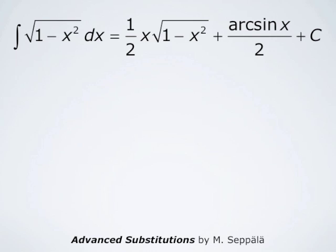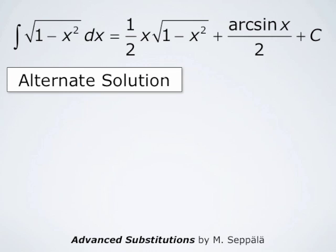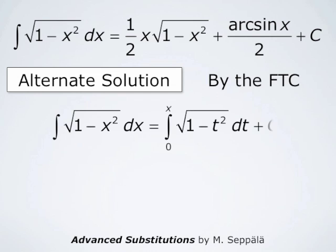This formula can also be derived alternatively. The alternate solution uses the Fundamental Theorem of Calculus, which states that an antiderivative of square root of 1 minus x squared can be obtained as the definite integral from 0 to x of square root of 1 minus t squared dt. So the indefinite integral of square root of 1 minus x squared dx equals that definite integral plus a constant of integration C.